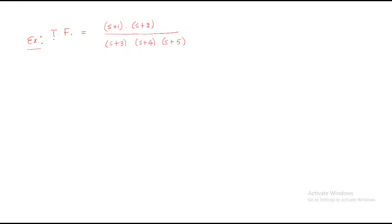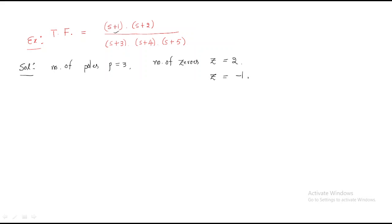To understand this, let's work through a problem. The given transfer function is (s+1)(s+2) / [(s+3)(s+4)(s+5)]. For the solution: the number of poles p equals 3, and the number of zeros z equals 2. The zeros are at minus 1 and minus 2, and the poles are at minus 3, minus 4, and minus 5. Since the numerator degree is less than the denominator, this is a strictly proper transfer function.